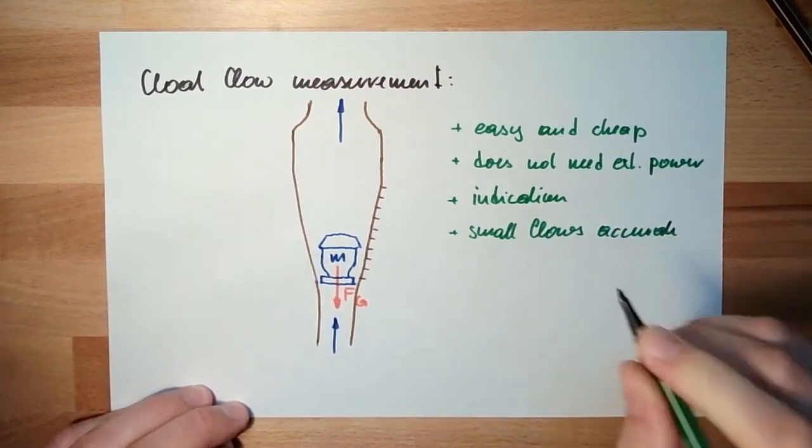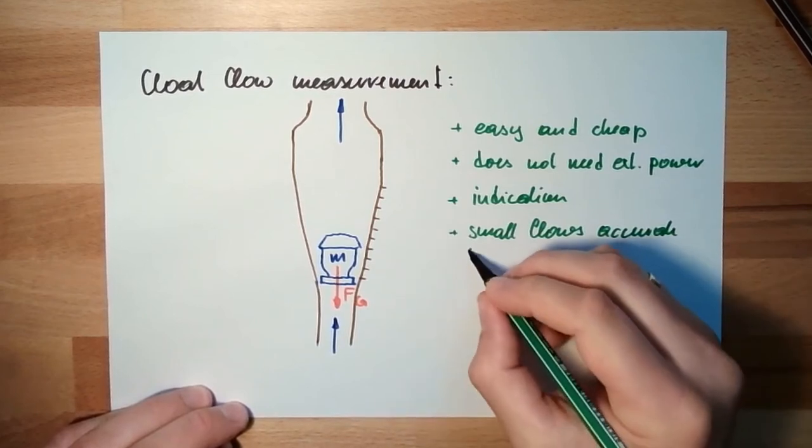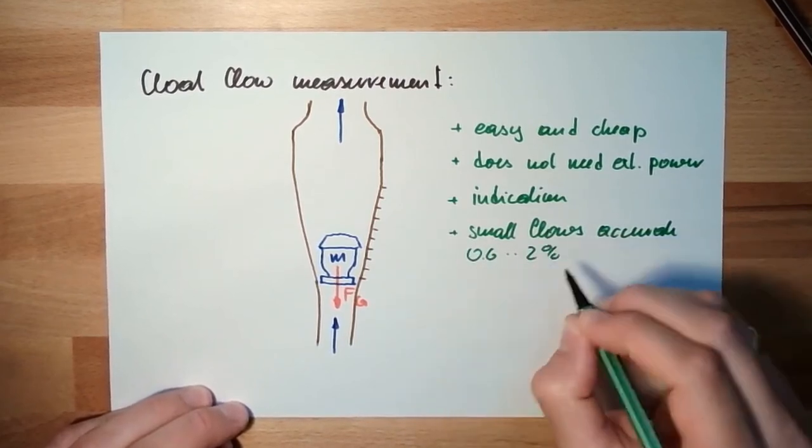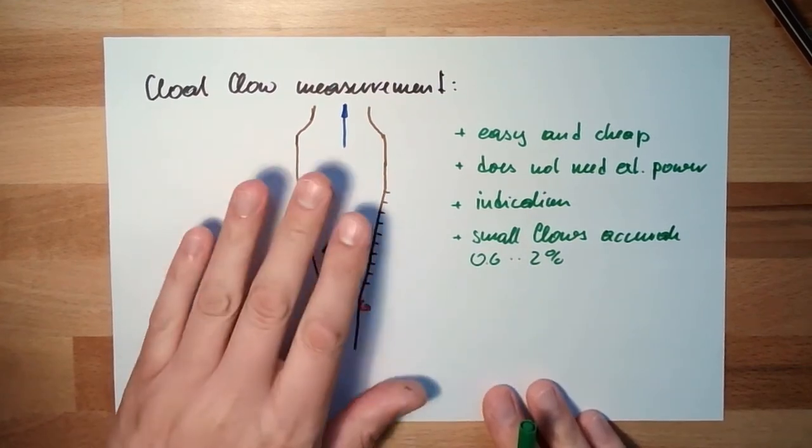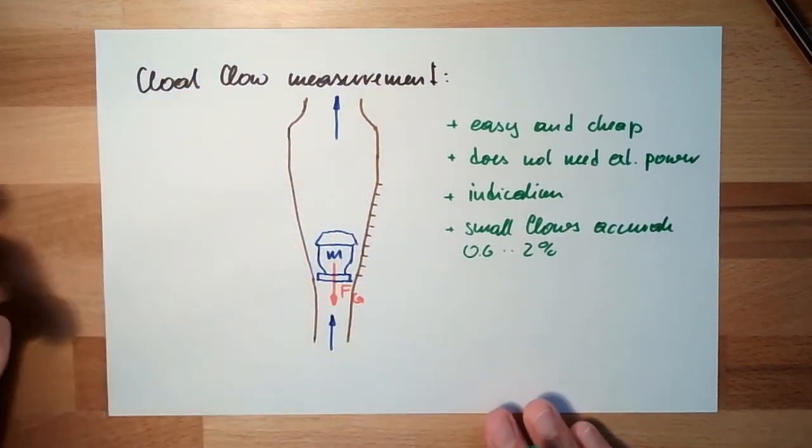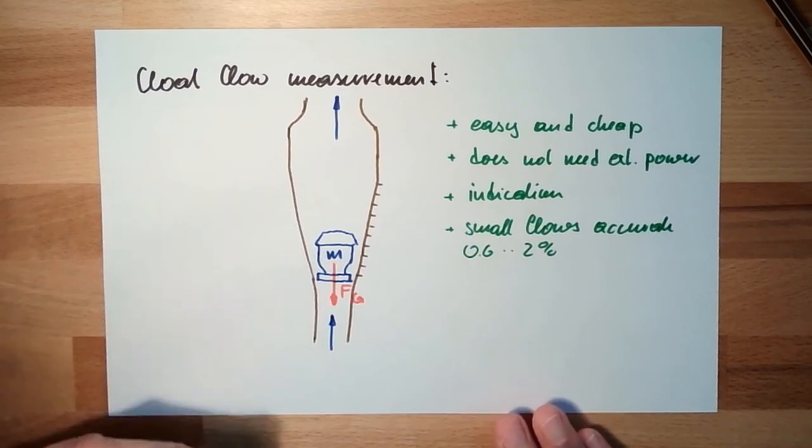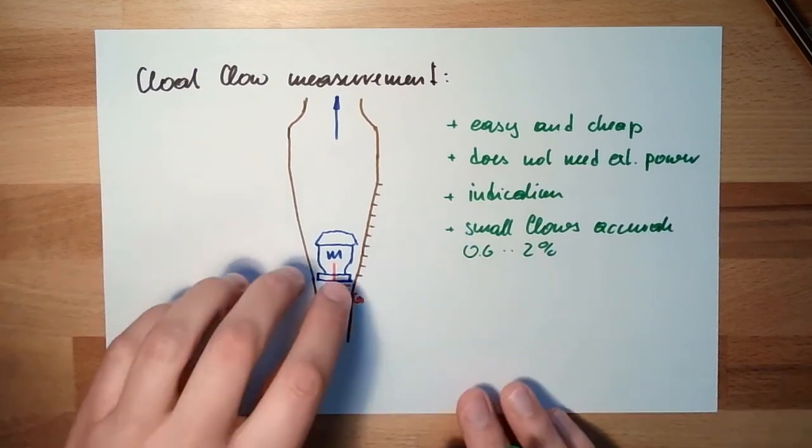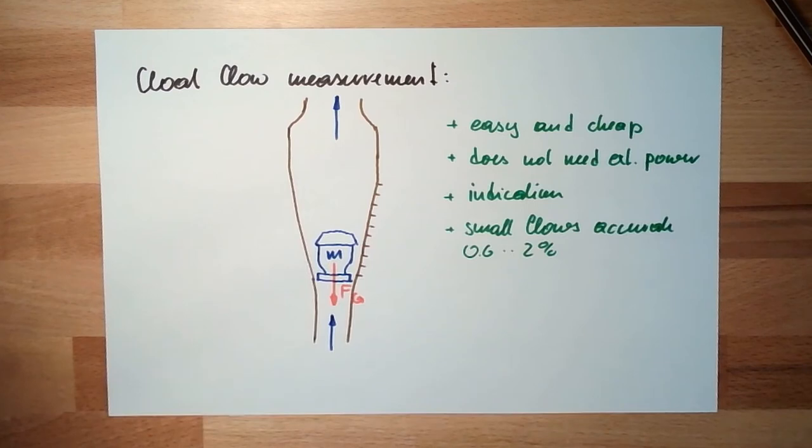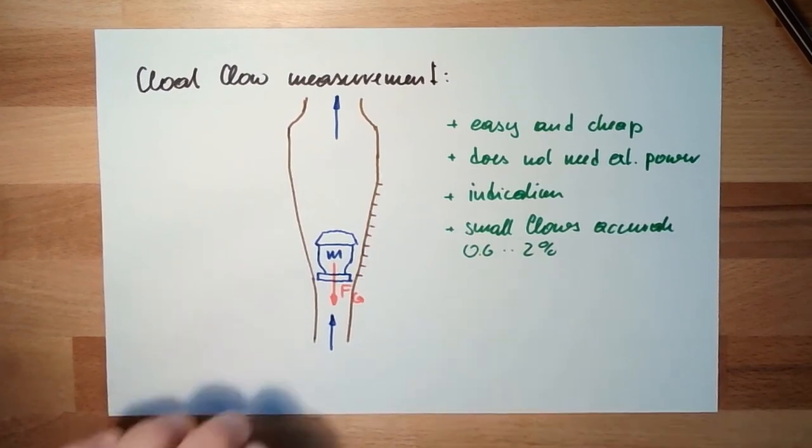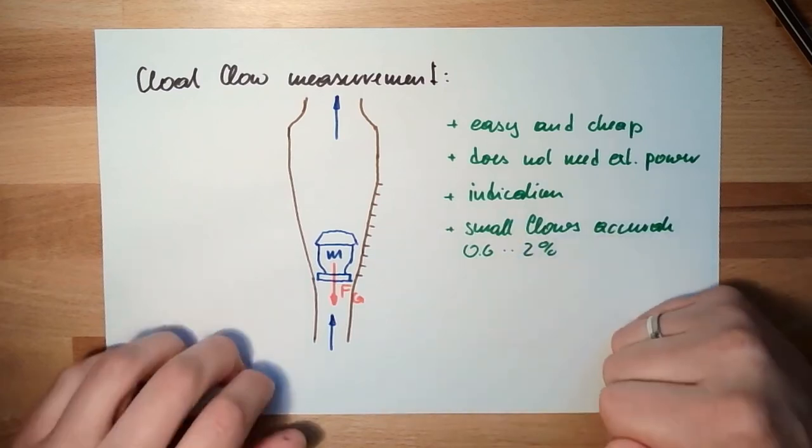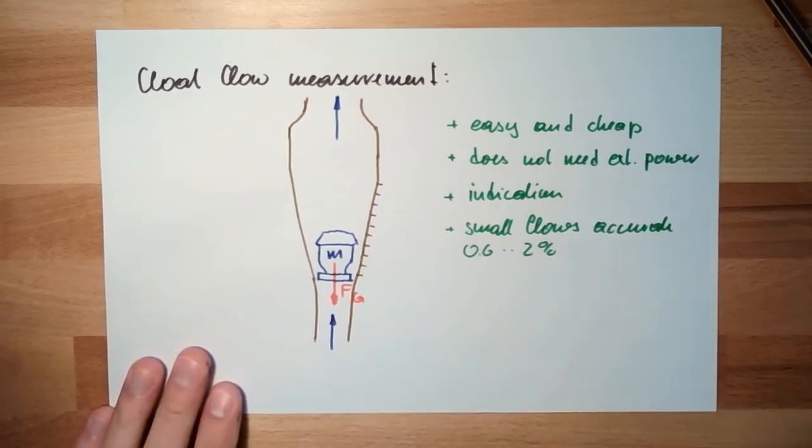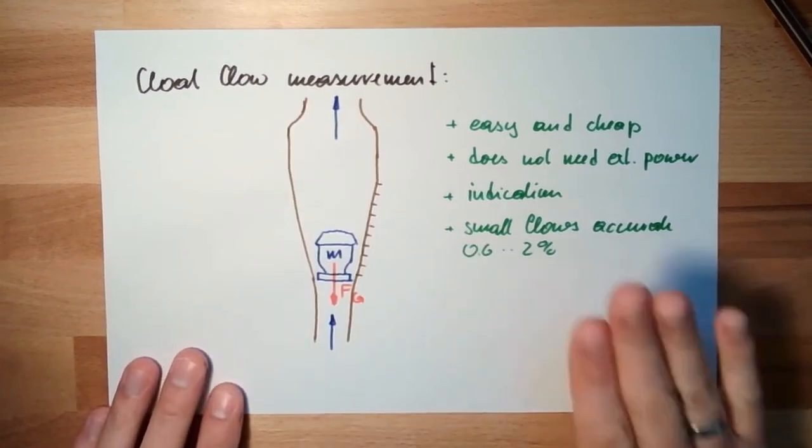Accurate - accuracy is 0.6 to 2 percent, so it's not too accurate but accurate for small flows. Last time we discussed differential pressure where small flows were a problem. Here, small flows are not a problem - it's equally accurate at small flows, and it's repeatable.